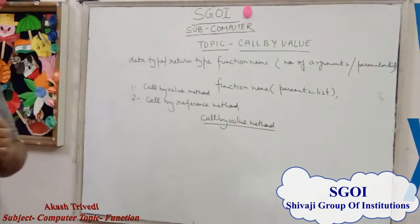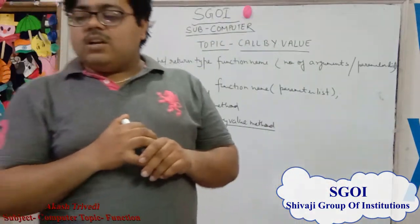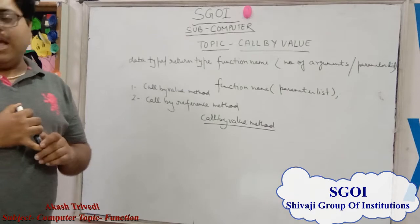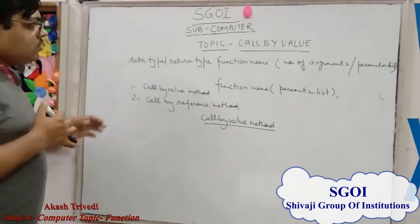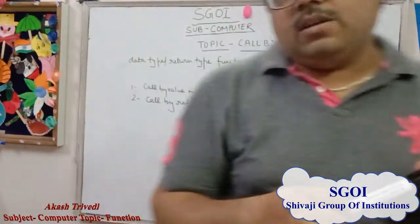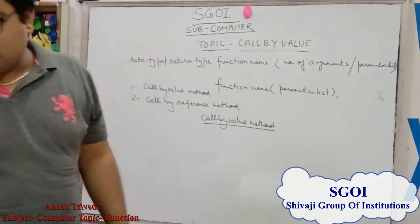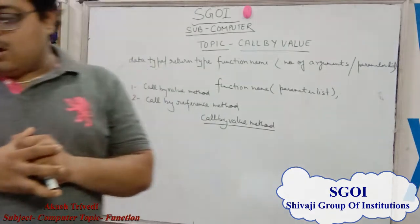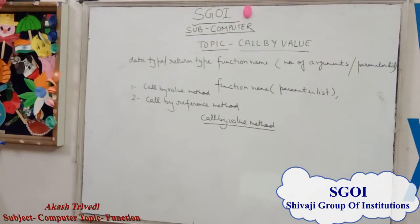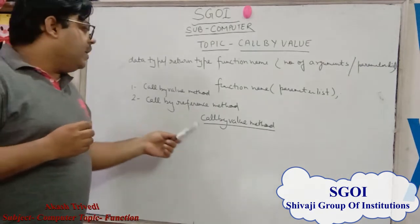Call by value method: when a program calls a function, the program control is transferred to the called function. The called function performs a definite task and returns using a return statement, which executes when the function reaches its ending. To call a function, you simply need to pass the required parameters along with the function name. The call by value method copies the actual value of the argument into the formal parameter of the function. In this case, changes made to the parameter inside the function have no effect on the argument.